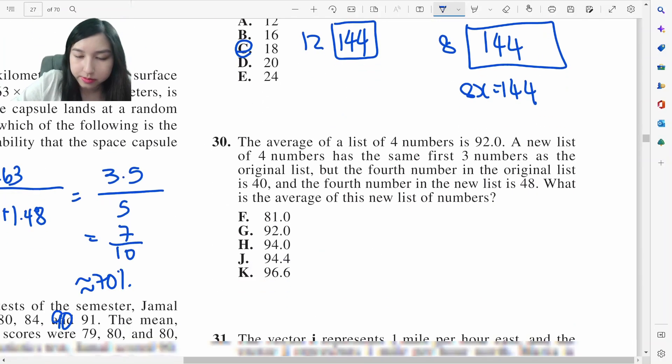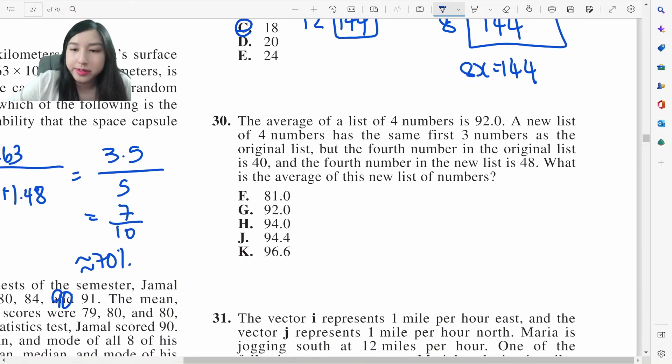The average of a list of numbers is 92. A new list of four numbers has the same first three numbers, but the fourth number is 40 and the other one is 48. What is the average of this new list? If 48 is greater than 40, the mean is going to be higher than 92. If you can see 48 is 8 more, you just have to take 8 divided by 4, which is 2. So your mean is going to increase by 2. It's going to be 94.